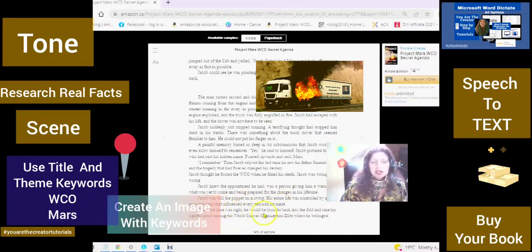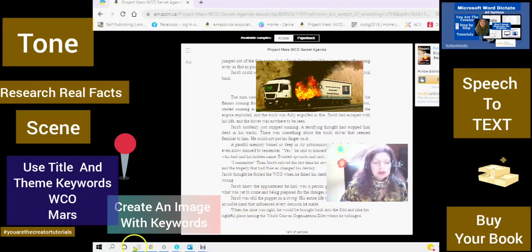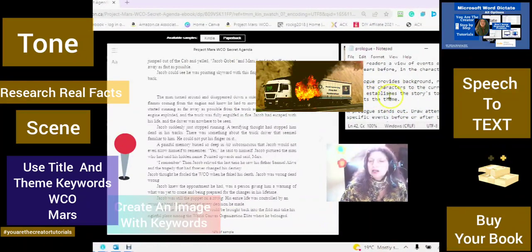Jacob was still the puppet on a string. His entire life was controlled by an invisible hand that influenced every decision he made. When the time was right, he would be brought back into the fold and take his rightful place among the world canvas organization elite where he belonged. So here I have set the tone. I have given a description and I have set the tone.